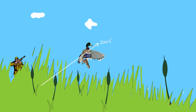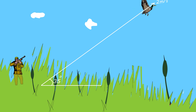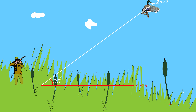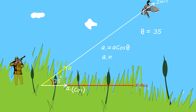Another example: A duck accelerates away from a hunter at 2.0 meters per second squared at an angle of 35 degrees to the ground. The horizontal component is adjacent to the angle, so ax = a cosine theta. Substituting: ax = 2 cosine 35 = 1.6 meters per second squared.